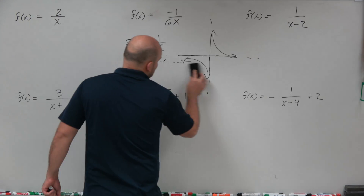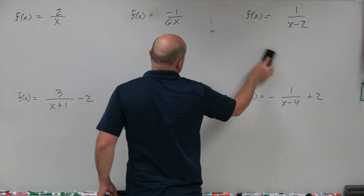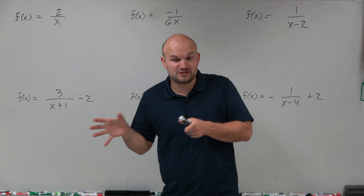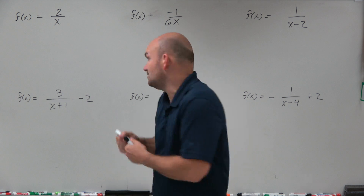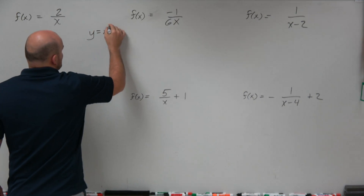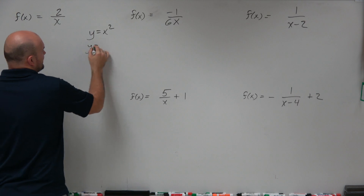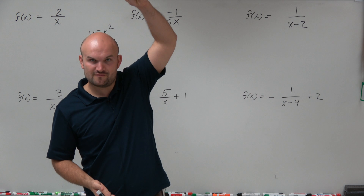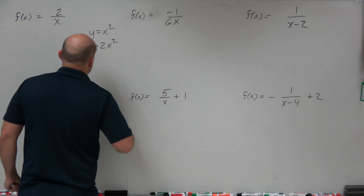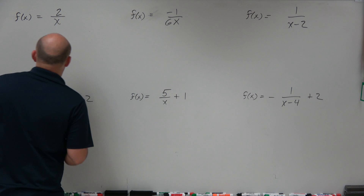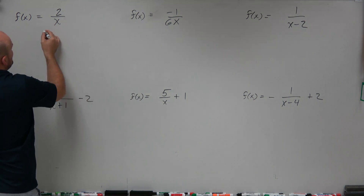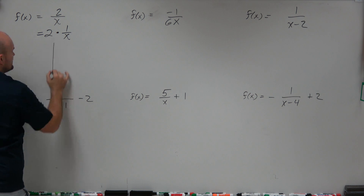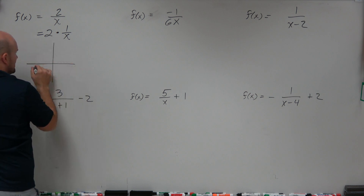In the first example, you can see it's being multiplied by 2. If you remember, being multiplied by 2 is going to affect the stretching or compressing — it's not shifting the graph left or right. For example, if here I have y = x², and then y = 2x², all that's doing is stretching it vertically. So in this example, we have our parent graph being stretched. You can look at this as 2 times (1/x) — all that's really doing is stretching the graph vertically.